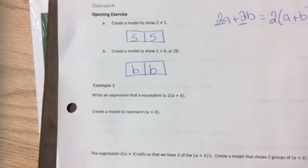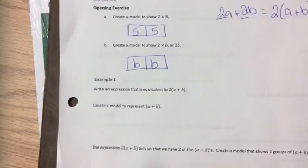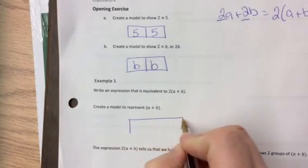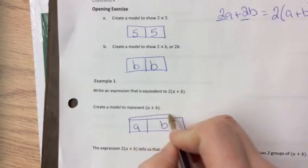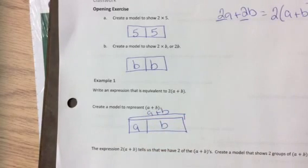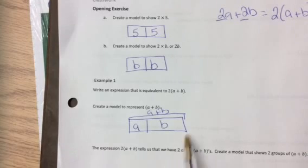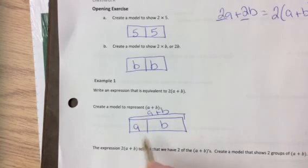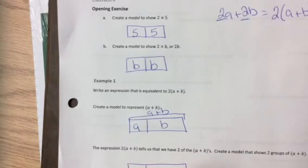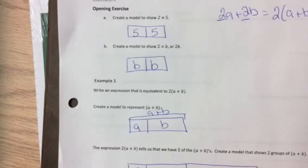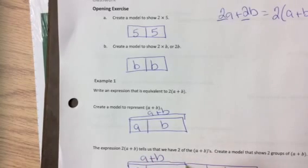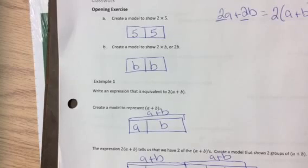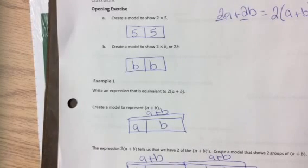So the first example is going to be writing an expression that is equivalent to 2 parentheses A plus B. First we're going to create a model that represents A plus B. It doesn't matter how big you make A or B, because we don't know the value of A or B. The expression 2 times A plus B tells that we would have 2 of the A plus B. So we could create a model that shows 2 groups of A plus B. Then we're going to draw an identical one to show 2 groups. We see 2 A's and 2 B's in this tape diagram.